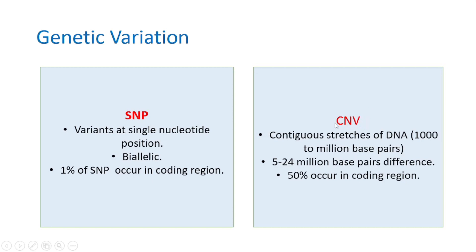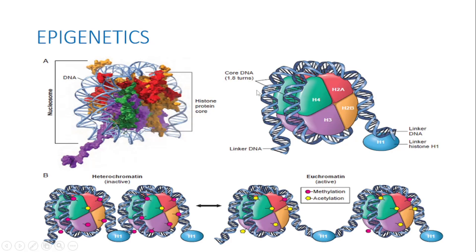Copy number variations (CNVs) involve large contiguous stretches of DNA ranging from a thousand base pairs to a million base pairs. CNVs are responsible for 5 to 24 million base pair differences between any two individuals, and 50 percent of CNVs involve gene-coding sequences. This type of variation underlies phenotypic diversity — most of the time, variations are due to copy number variations, whereas SNPs have only a one percent chance of occurring in coding regions.